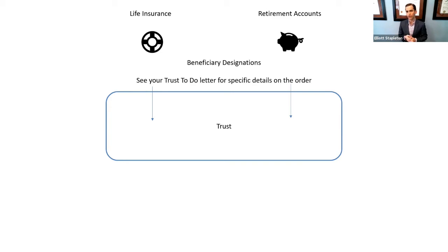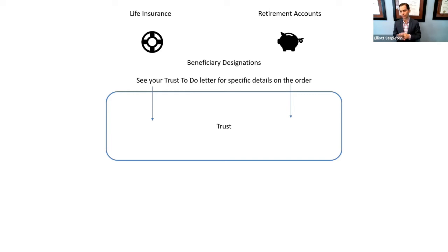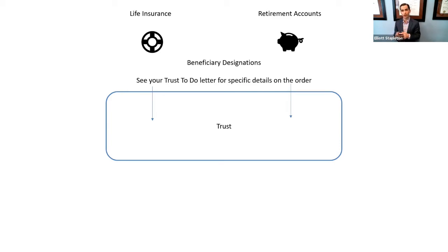For a retirement account, similarly, you would go to your employer or whatever institution holds your retirement account, and you would update the beneficiary designation to include the trust.